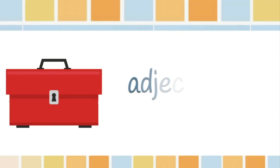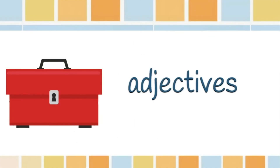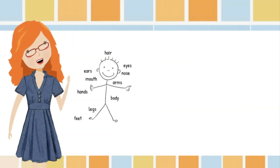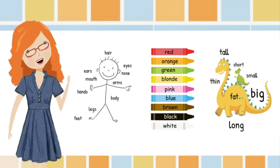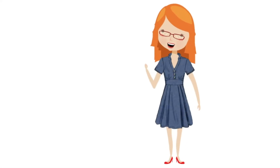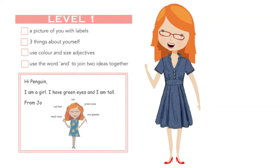Now I'm going to need some adjectives so I can describe more about things like size and colour. Now I have everything I need ready to begin to build my factual description. In the next video we're going to write together. Choose level 1 and we'll use colour and size adjectives to describe three things about ourselves.